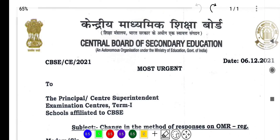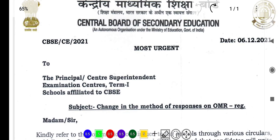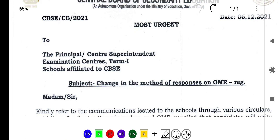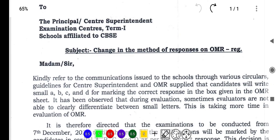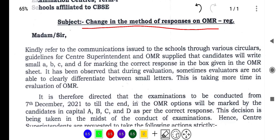This is the most urgent circular sent by the Central Board of Secondary Education regarding Grade 10 and Grade 12 Term 1 examinations. This circular was sent on 6th December 2021 to the principal and center superintendent. The main objective of this circular is a change in the method of responses on the OMR sheet — students need to change how they give their responses.